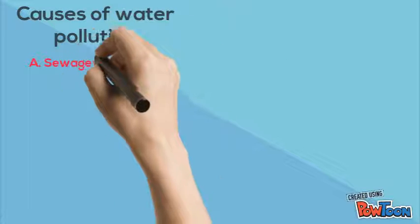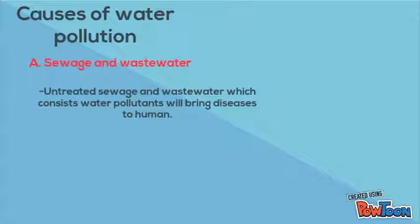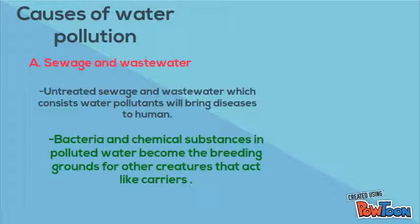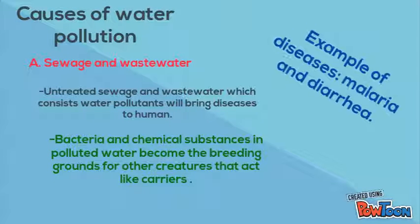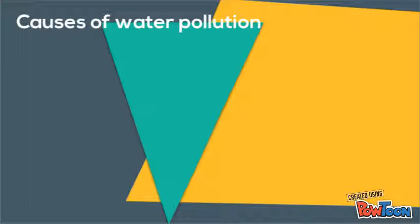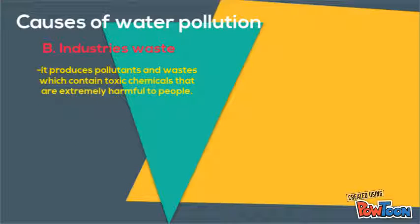Causes of water pollution. First, sewage and wastewater. Untreated sewage and wastewater which consists of water pollutants will bring disease to humans. Bacteria and chemical substances in polluted water become breeding grounds for other organisms that act as carriers. Next is industrial waste, which produces pollutants and waste containing toxic chemicals that are extremely harmful to people.